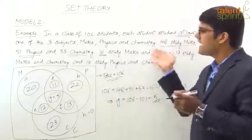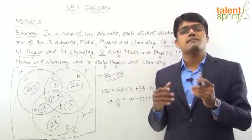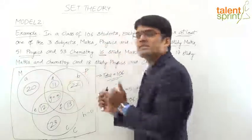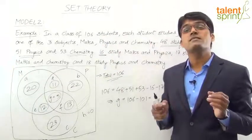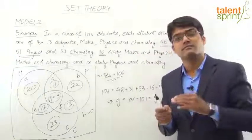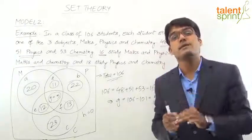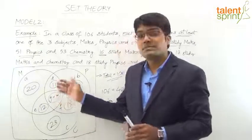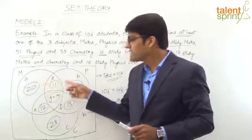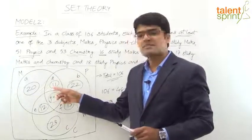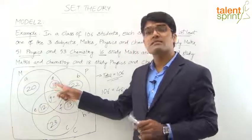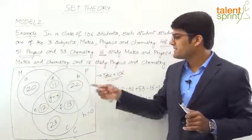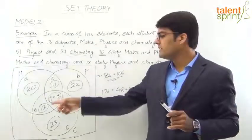For example: How many students study Maths and Physics? The answer is D + G = 11 + 5 = 16. But if the question asks 'Maths and Physics only' (not Chemistry), the answer is just region D = 11, because D represents students in both Maths and Physics but outside the Chemistry circle. Similarly, Physics and Chemistry only = F = 13, and Maths and Chemistry only = E = 12.